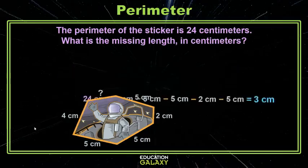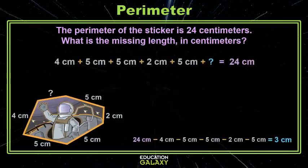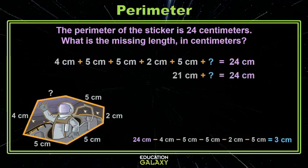Great. Now let's try it the other way. We're going to add up all the sides that we do know and still leave a spot for the one we don't know. If we add what we do know, we get 21. Now we just need to know how to get from 21 to 24, which is 3.